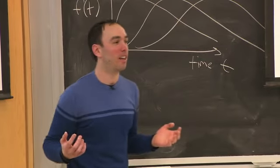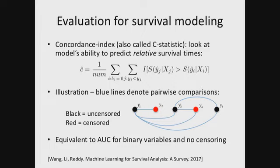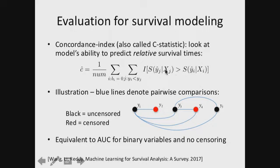The remaining question is how to evaluate survival models. We talked about area under the ROC curve for binary classification, but here we're doing something more akin to regression. A standard performance measure is the C-statistic, or concordance index. It has a very intuitive definition: it sums over pairs of data points that can be compared, asking what is the likelihood of the event happening for an event that occurs before another. What you want is that the event predicted to occur later has a larger predicted probability than the one predicted to occur earlier.